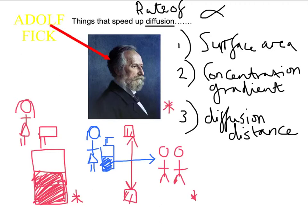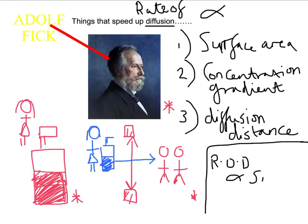We can apply this principle to real life biological examples. At GCSE you don't often come across this - you do it at A level - but here is Fick's law. The rate of diffusion is proportional to the surface area times the concentration gradient divided by diffusion distance. So ROD is rate of diffusion, SA is surface area, C is concentration gradient, D is diffusion distance. A bigger surface area increases diffusion, a bigger concentration gradient increases the rate of diffusion, and a smaller value of D - because we're dividing by it - results in a bigger rate of diffusion.